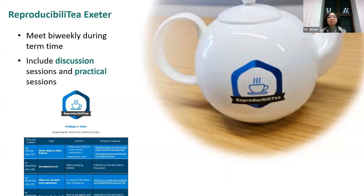The journal club members meet bi-weekly during term time. At the beginning of each term, we arrange a schedule which includes discussion sessions and practical sessions. The discussion sessions are more like a traditional journal club format — we get together, drink tea, and discuss a paper. The practical sessions are more like a workshop, where we get hands-on experience, like doing R analysis and step-by-step guidance on pre-registration.